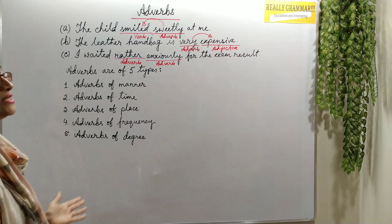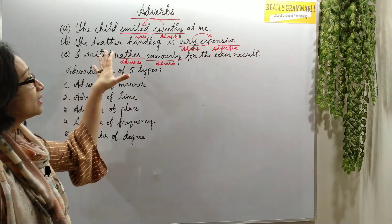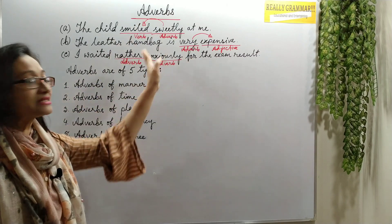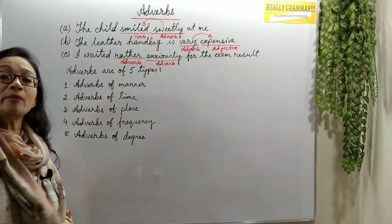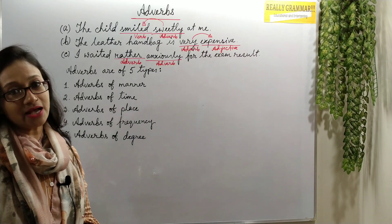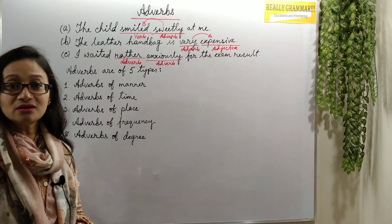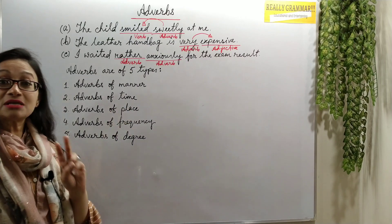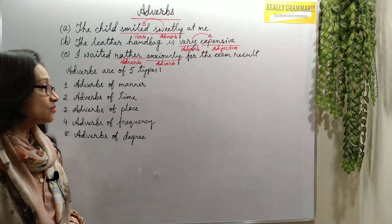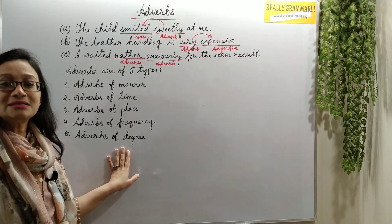Now, how many types of adverbs are there? Adverbs are of five types: adverbs of manner, adverbs of time, adverbs of place, adverbs of frequency, and adverbs of degree.